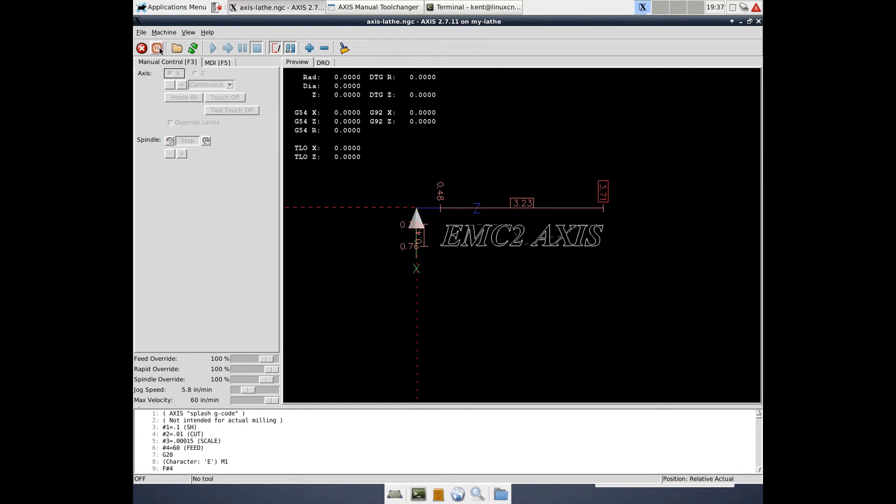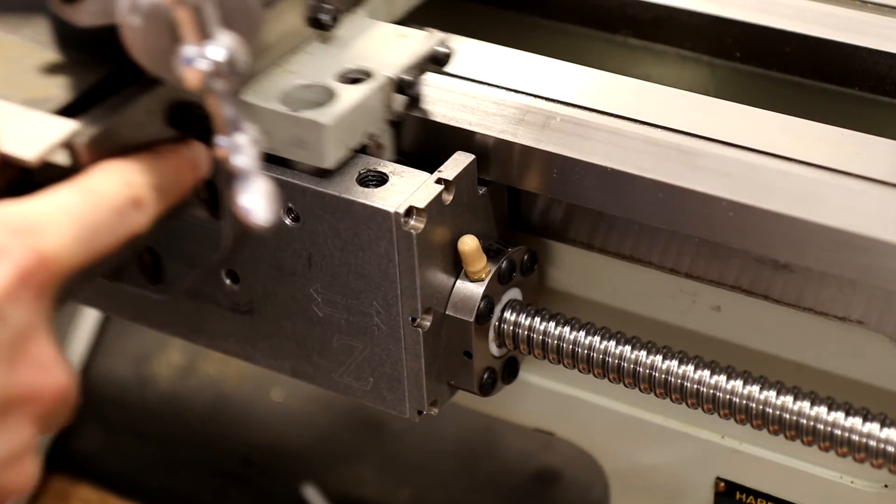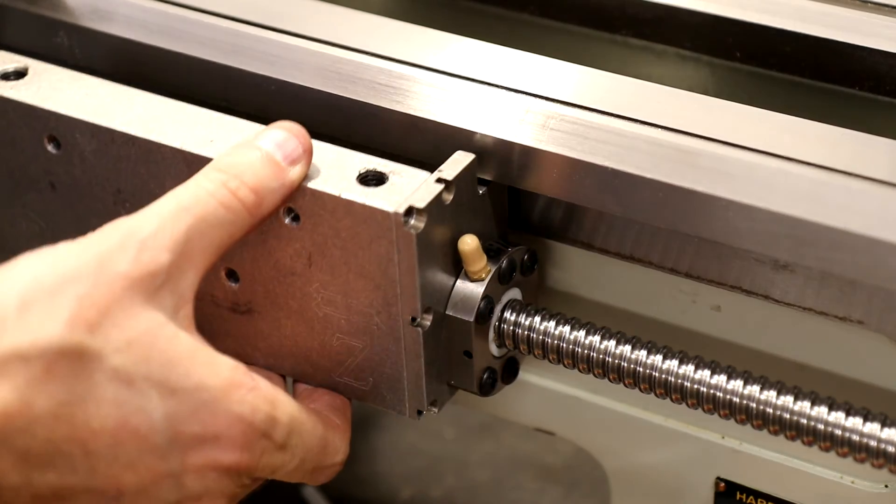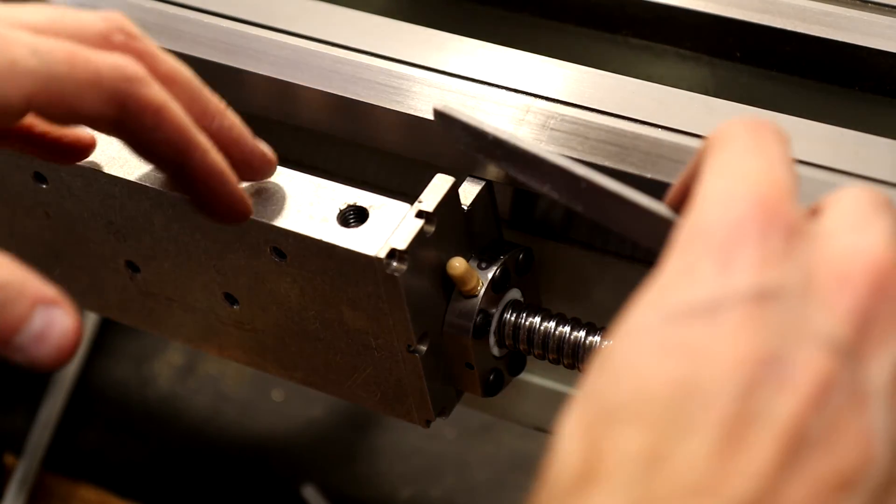Now inside LinuxCNC, I take it out of e-stop and start the machine, and then jog each of the axes. With these small 157-ounce-inch stepper motors, the z-axis has a small amount of binding on the tailstock side. One of the pieces of the apron is slightly rubbing the bed, and a small amount of filing solves the problem.